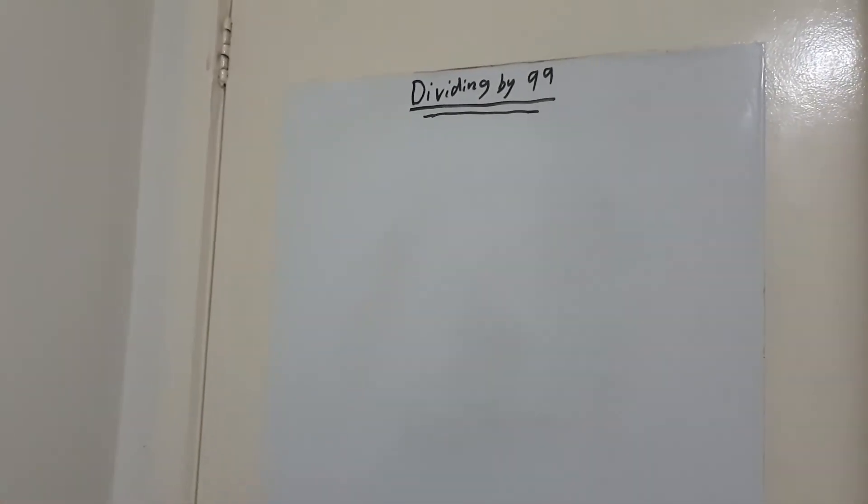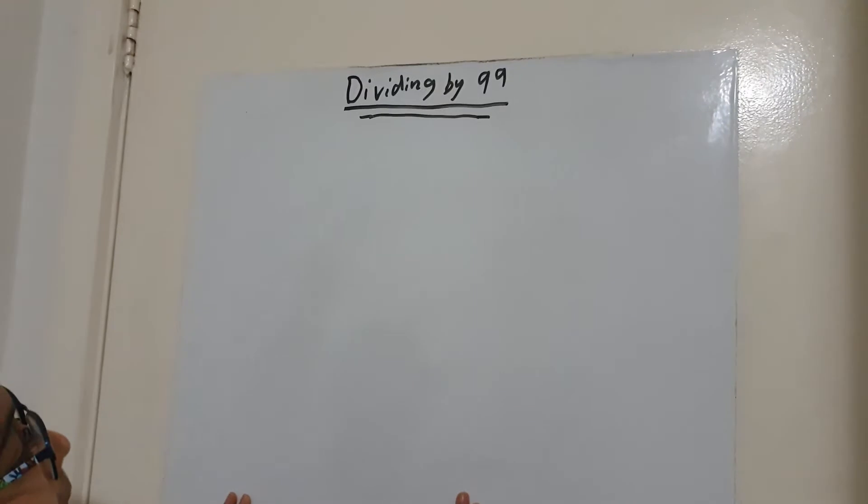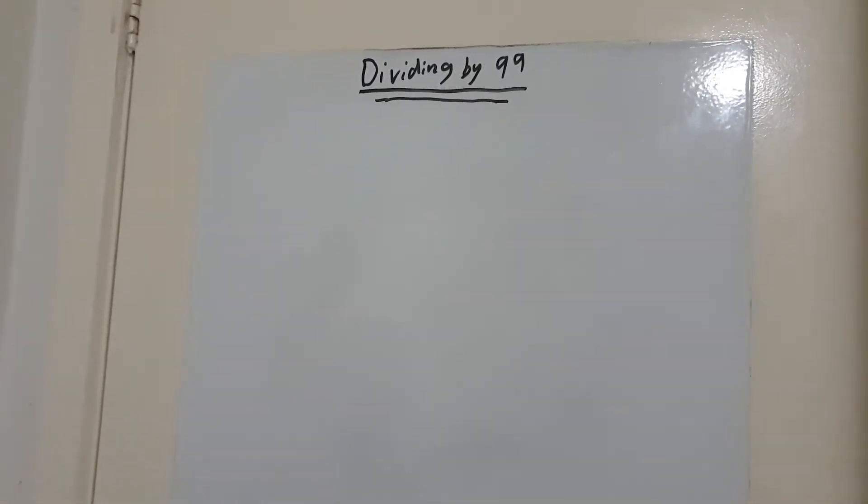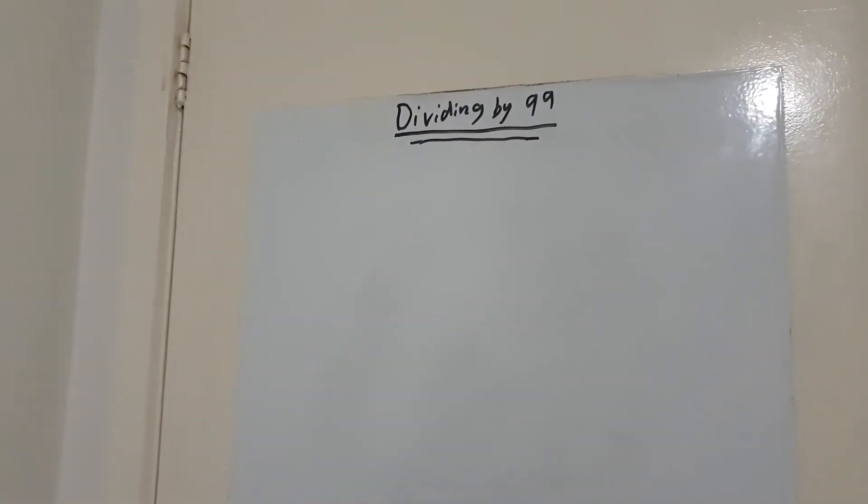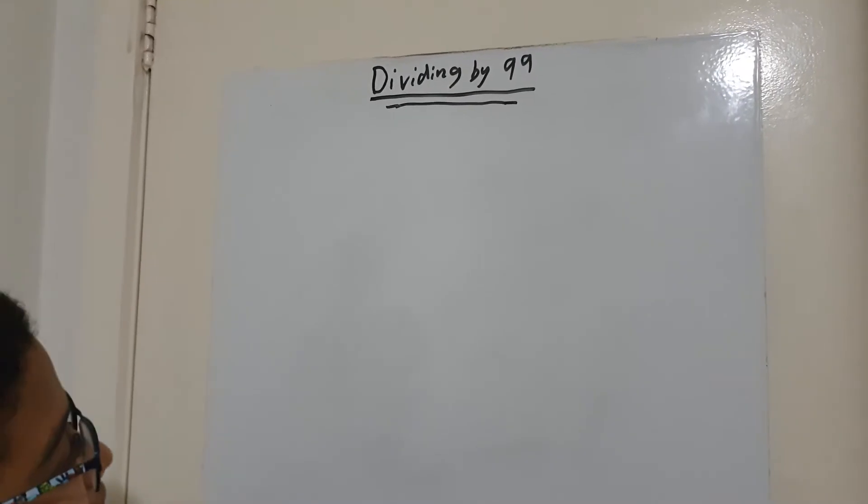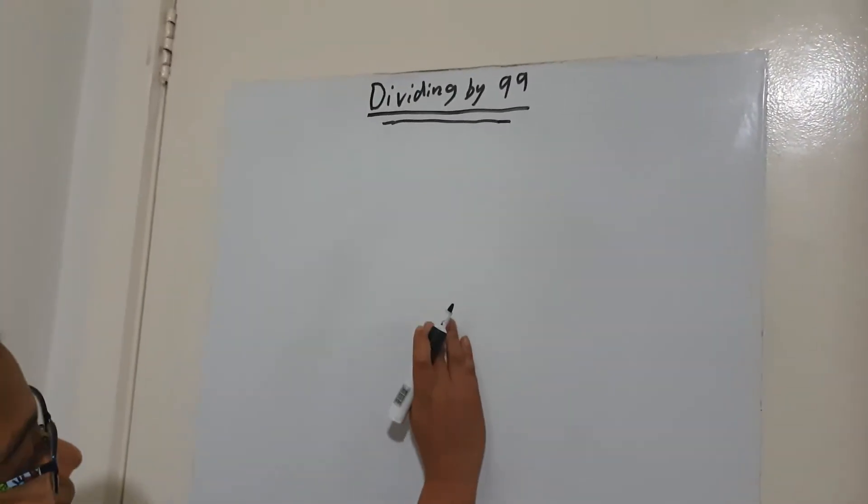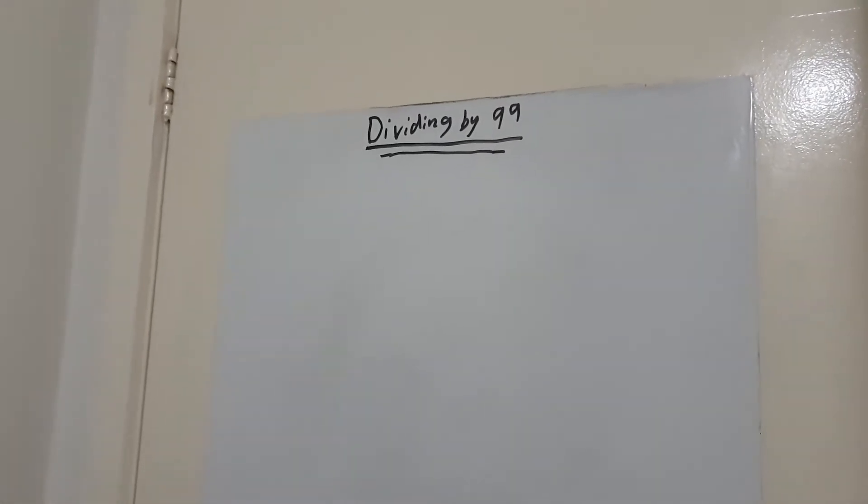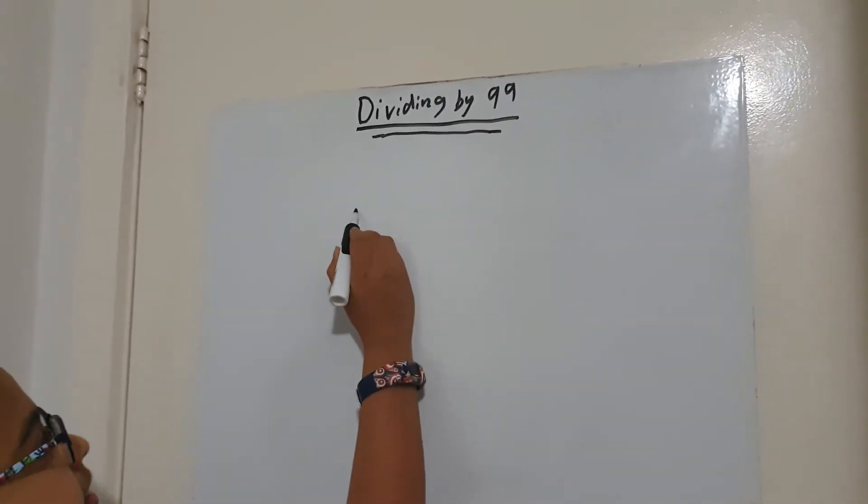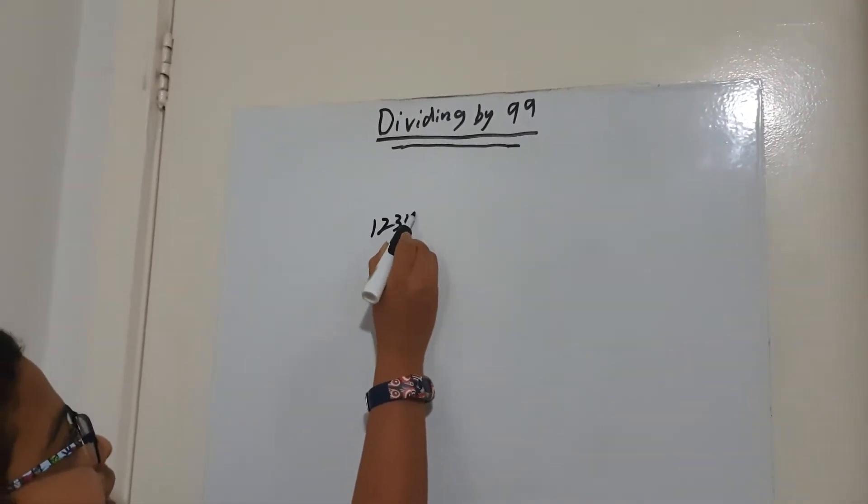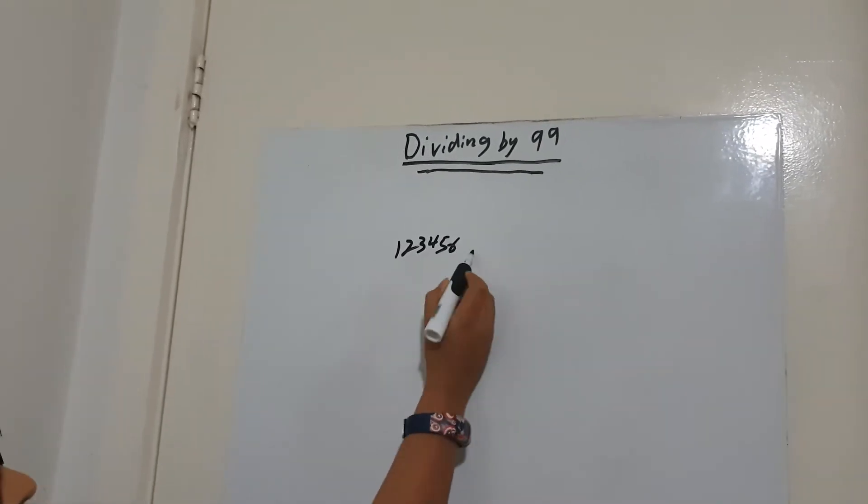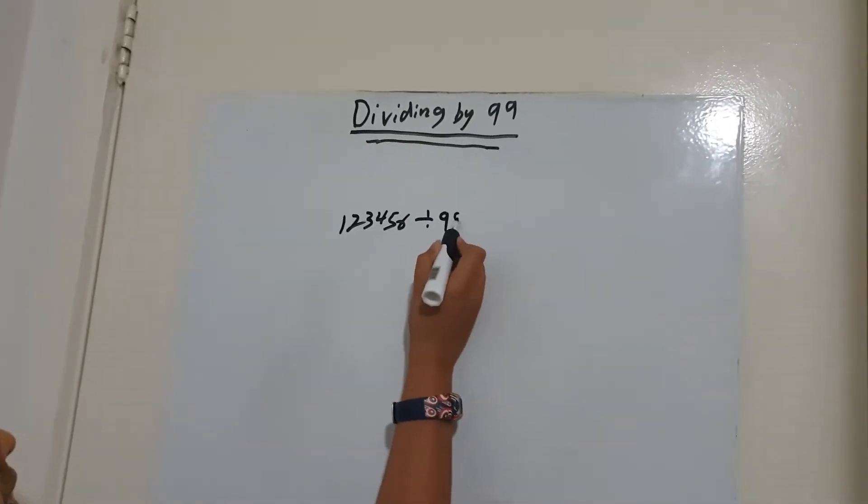So let's get started. We're going to be dividing by 99, and it can be any amount of digits. So 4, 3, well, it can't be a 2, unless it's 99, because then it won't be able to divide by 99. So we're doing any number, 3 digits, 4 digits, 5 digits, any number. So I'm just going to start with 123456 divided by 99.